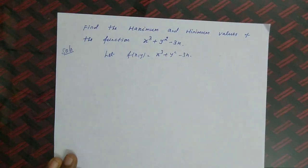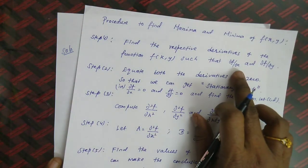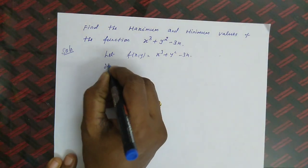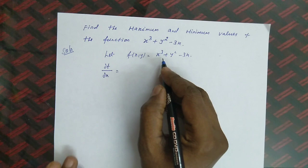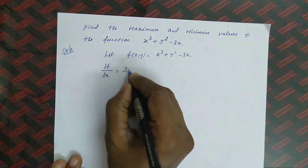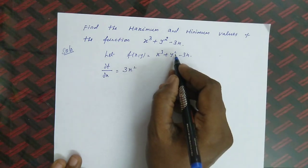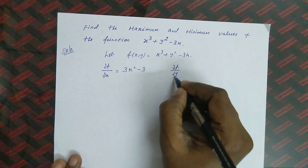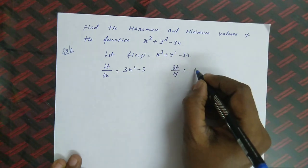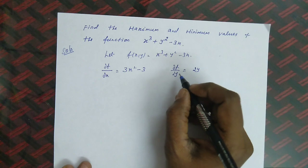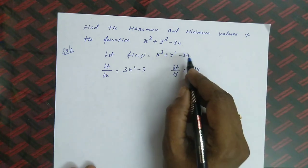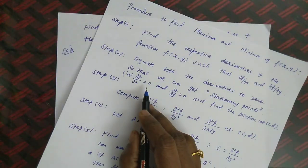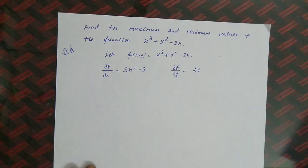Step 1: Find the partial derivatives. ∂f/∂x: differentiating x³ gives 3x², y² is constant so it gives 0, and −3x gives −3. So ∂f/∂x = 3x² − 3. For ∂f/∂y: y² differentiates to 2y, and x terms are treated as constants giving 0. So ∂f/∂y = 2y. Step 2: Equate ∂f/∂x = 0 and ∂f/∂y = 0.